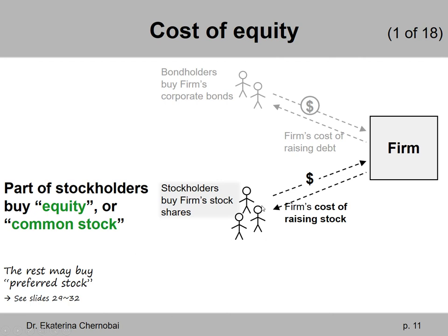Let's start by looking at the cost of equity. I have 18 slides — it looks like a lot, but trust me, there won't be anything new in the next 18 slides. It's really a review. About a third of this chapter is a review. Everything that comes together in this chapter comes from chapters eight, seven, and thirteen — three different chapters from before. So it's worth reviewing everything and kind of putting things in its place.